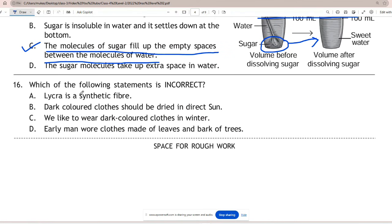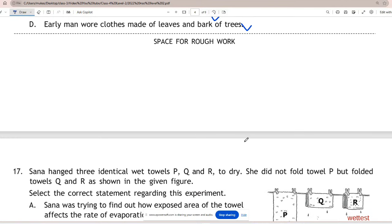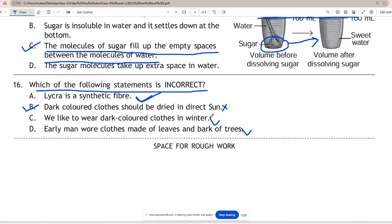Question 16: Which of the following statements is incorrect? The answer is B - dark colored clothes should be dried in direct sun is incorrect statement, and rest all other statements are correct. Lycra is a synthetic fiber, we like to wear dark colored clothes in winter is also correct, and early man wore clothes made of leaves and bark of trees is also correct.